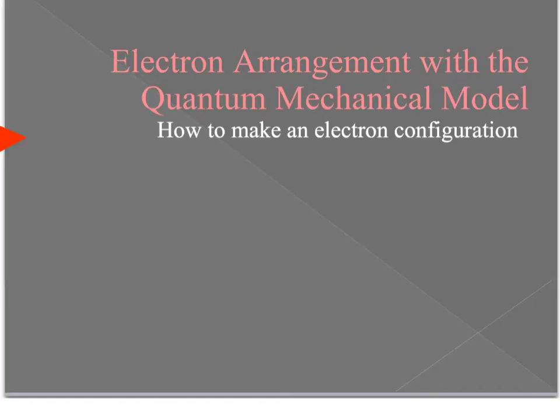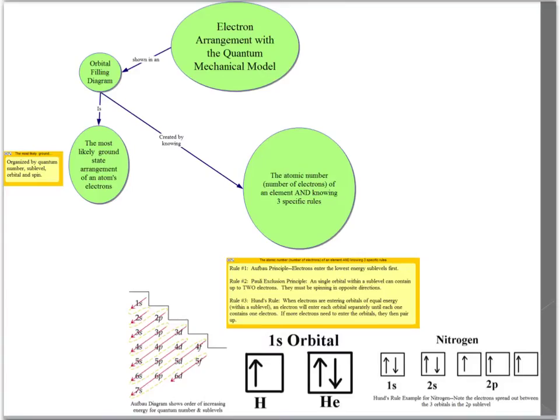This presentation is about learning how to create electron configurations. This graphic organizer provides an overview of the topics that will be covered, including how to create an orbital filling diagram, which is the most likely arrangement of an atom's electrons using the quantum mechanical model.